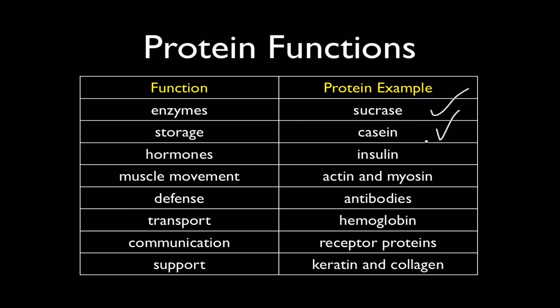There are hormone proteins like insulin, which helps regulate our blood sugar. There are proteins that allow muscles to contract by interacting with each other. The two most common of these are actin and myosin. There are proteins that function in defense. You've probably heard of antibodies. There are proteins that function in transport. We just talked about hemoglobin and its role in transporting oxygen in the blood. There are proteins that function in communication. These are the embedded proteins in cell membranes that receive signals and interact with other cell components.